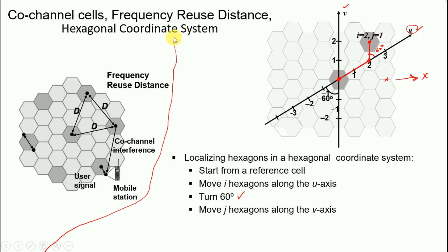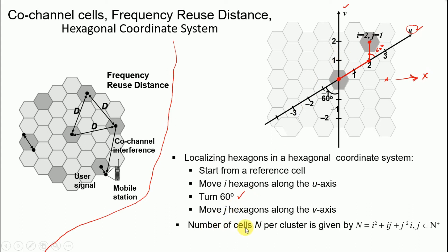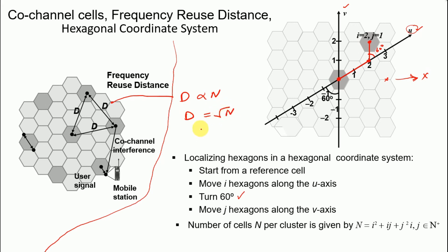This hexagonal coordinate system gives us the number of cells n per cluster, expressed as n = i² + ij + j², where i and j are positive integer values. The frequency reuse distance D is proportional to √n — specifically, D = √n · R, meaning the frequency reuse distance equals the square root of the total number of cells in a cluster times R.